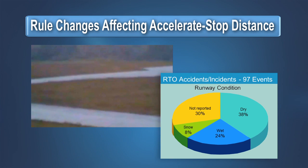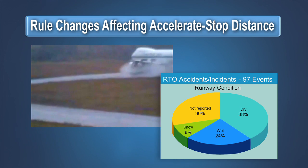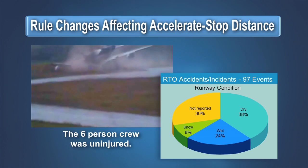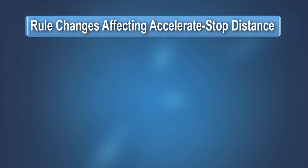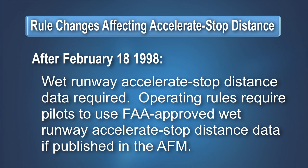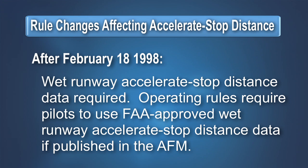In response to the disproportionate number of rejected takeoff accidents on wet runways, the certification rules were again amended in 1998. Manufacturers are now required to provide wet runway accelerate stop distance and wet runway takeoff distance data in the airplane flight manual for all newly type certificated transport airplanes, and the operating limitations and rules require the use of this data when the runway is wet.